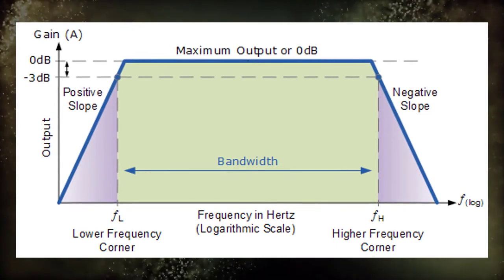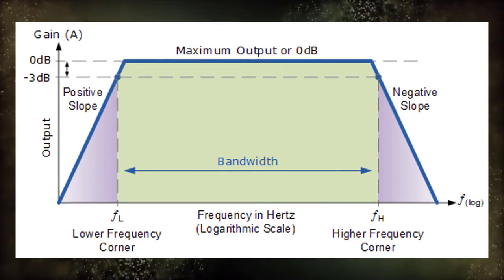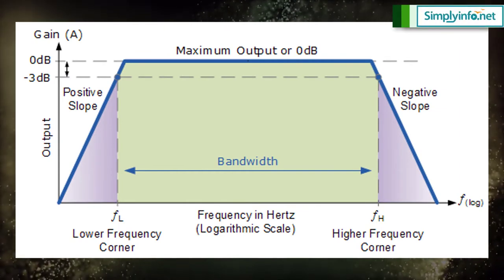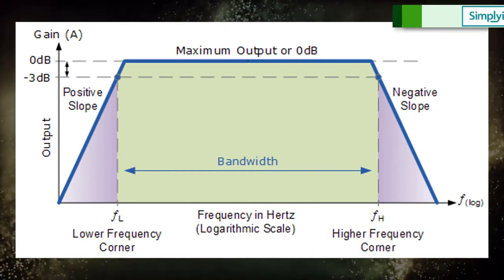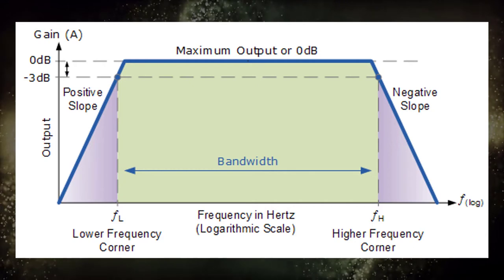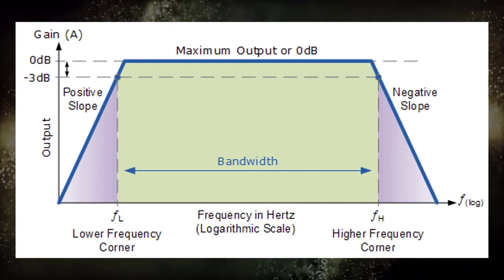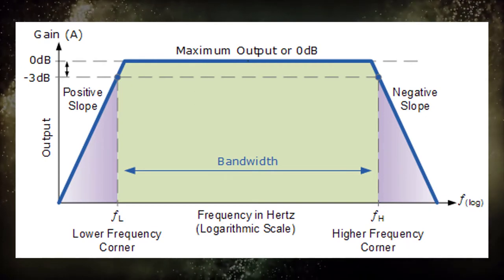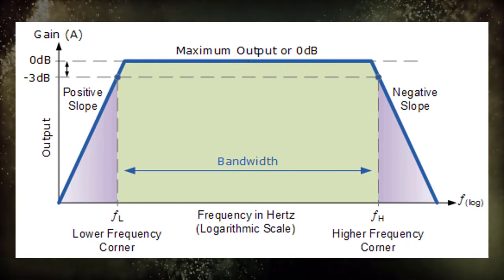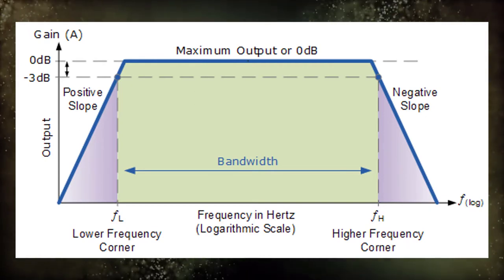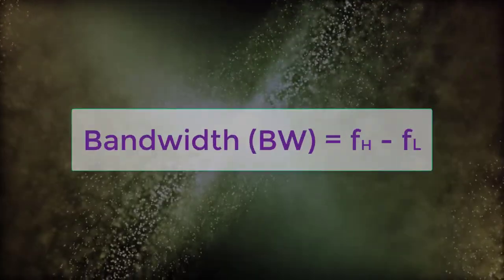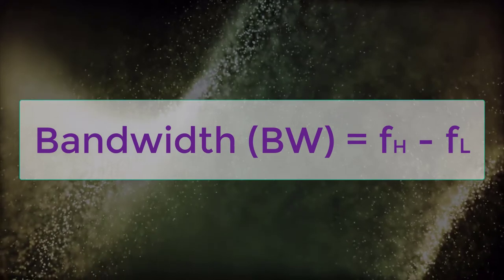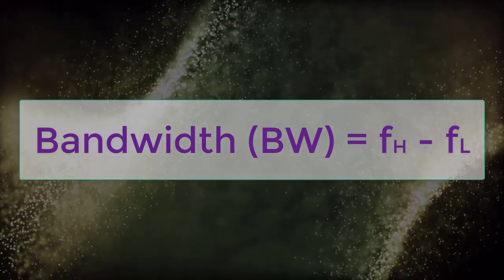Frequency points FL and FH relate to the lower corner or cutoff frequency and the upper corner or cutoff frequency points respectively where the circuits gain falls off at high and low frequencies. These points on a frequency response curve are commonly known as the minus 3 dB points. So the bandwidth is simply given as bandwidth BW equals FH minus FL.